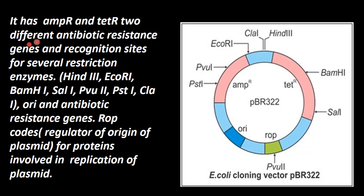Now, regarding the speciality of the plasmid as a vector — it has a quality marker. The markers present are an ampicillin resistance gene and a tetracycline resistance gene. Two different antibiotic resistance genes are present, making organisms resistant to the antibiotics ampicillin and tetracycline. It also has recognition sites for several restriction enzymes.